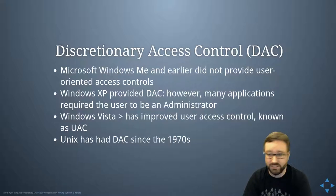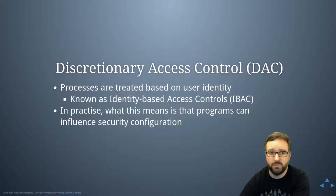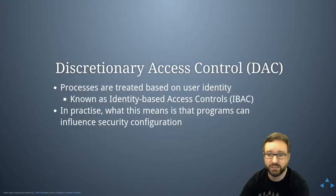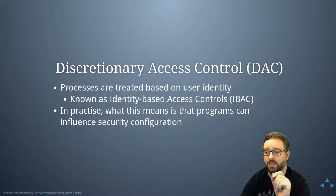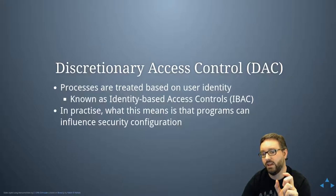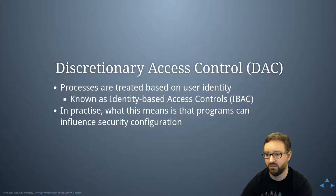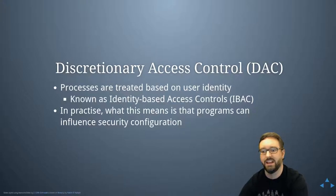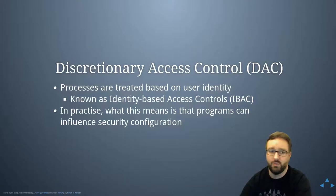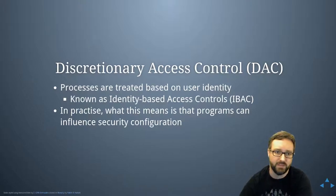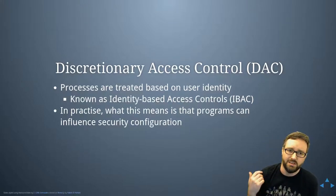On a discretionary access control system like Linux, when you start a process as a user, that process has your user identity — the UID — associated with it, and all access decisions are based on that UID. When all decisions are based on the identity of the person, that's also known as identity-based access controls. In practice, this means all programs run with all of your privileges.